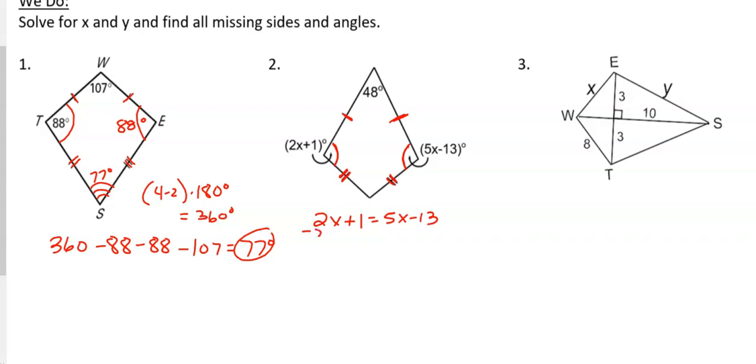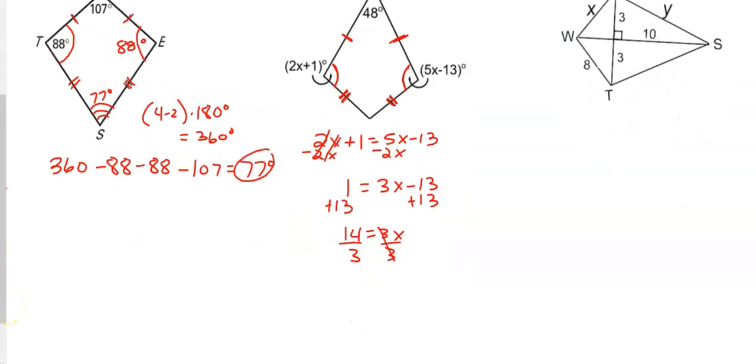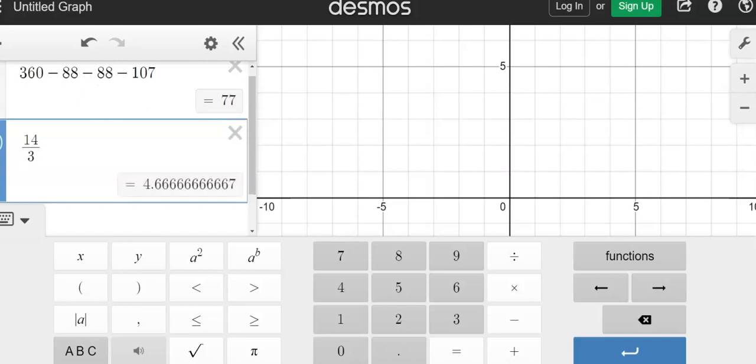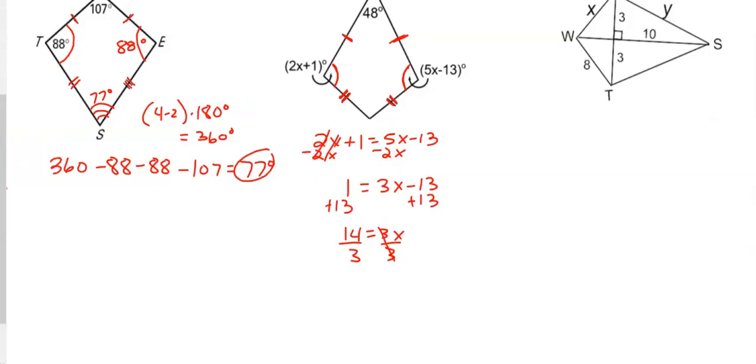So I like to try to keep my x's positive if at all possible. So I'm going to start by subtracting 2x from both sides. Now I'm going to have 1 equals 3x minus 13. And I'm going to add 13 to both sides. And we're going to end up with 14 equals 3x. Divide by 3. And we are not going to get a nice whole answer here, but that's okay. We don't always get perfect answers in math. So we're going to do 14 divided by 3 and about 4.67. So x is approximately 4.67.